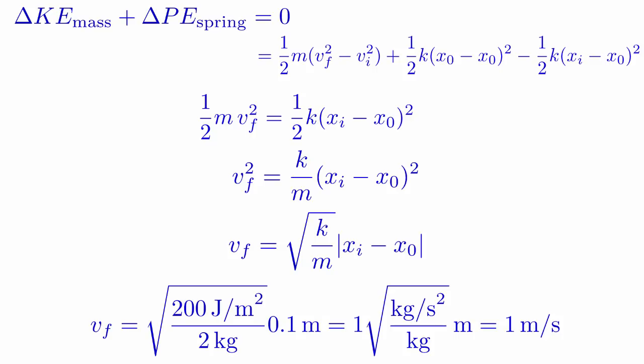Inside the square root, we get kilograms per second squared over kilograms. So the kilograms cancel, and we have a square root of 1 over seconds squared. So our final answer is 1 meter per second.